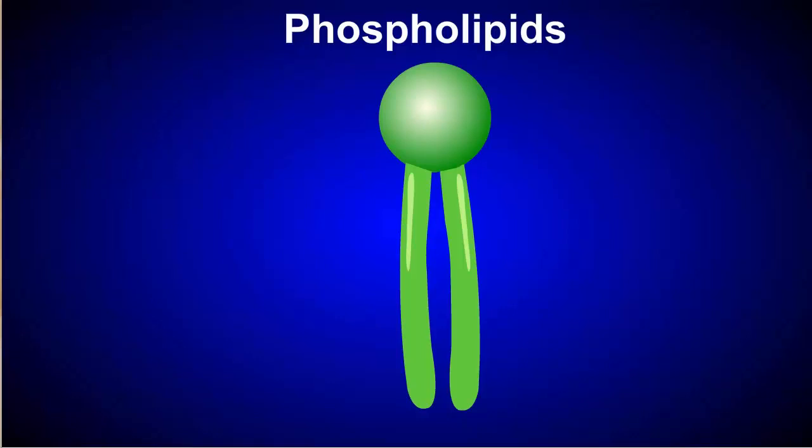Cell membranes are primarily made of phospholipids, which are large lipid molecules similar to triglycerides.